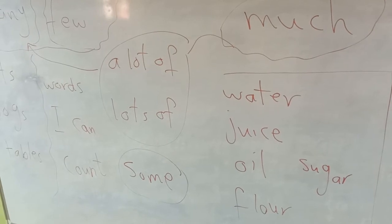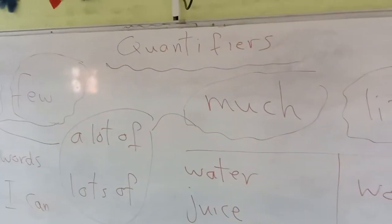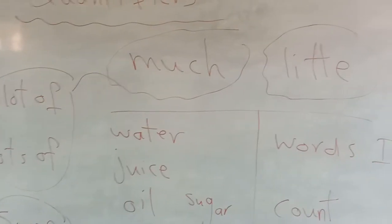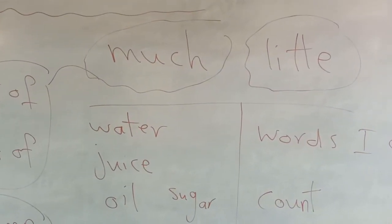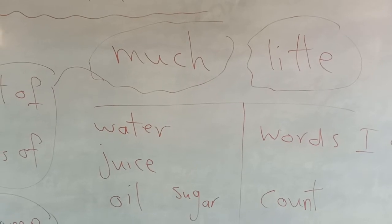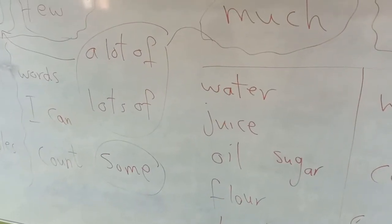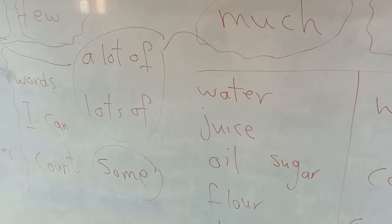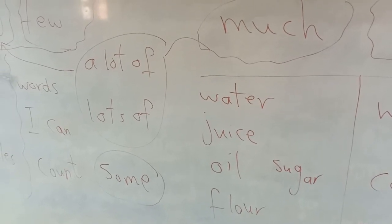So, what are quantifiers? Many and few — for things I can count. Much and little — for things I can't count. And a lot of, lots of, and some — for both: things I can count and things I can't count.